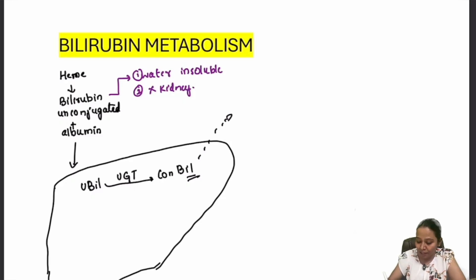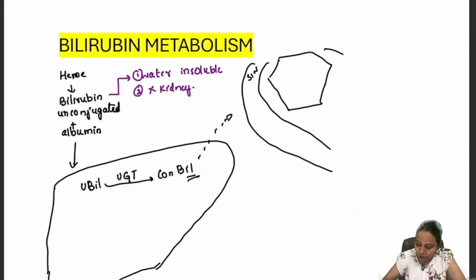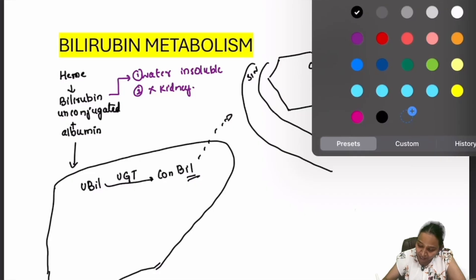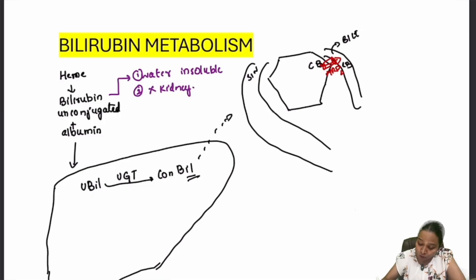Let's magnify the hepatocyte. The hepatocyte has sinusoids where blood flows, and biliary canaliculi where bile is present. Conjugated bilirubin inside the hepatocyte requires a channel to be transported out — this channel is called the MRP2 transporter, by which conjugated bilirubin is excreted into the bile.